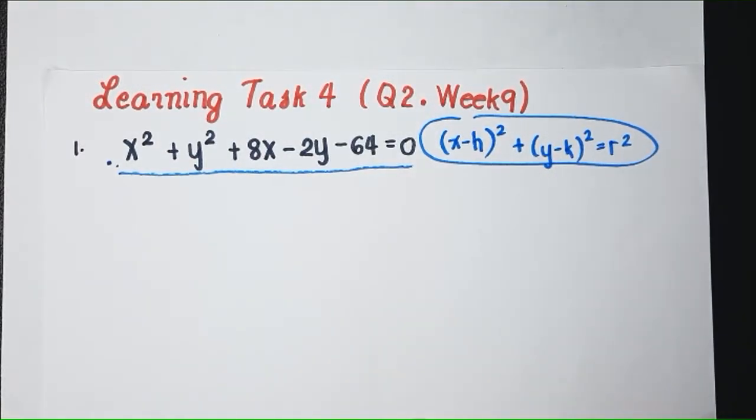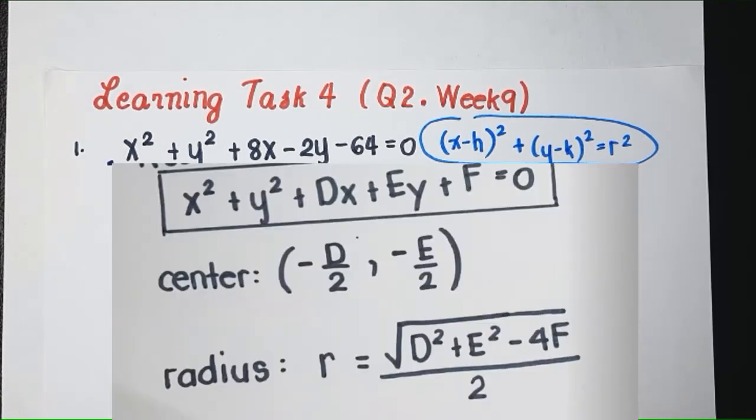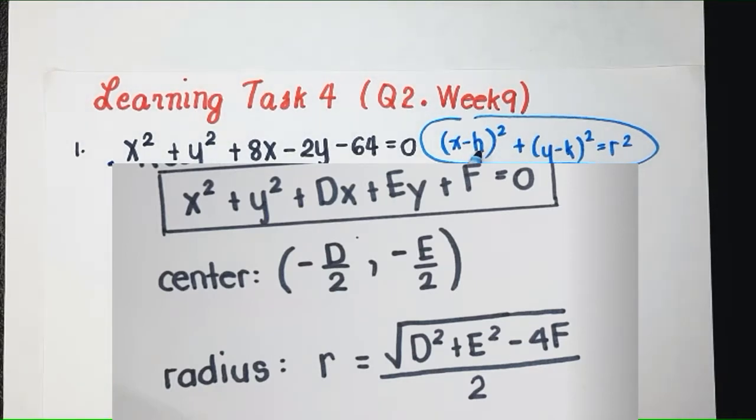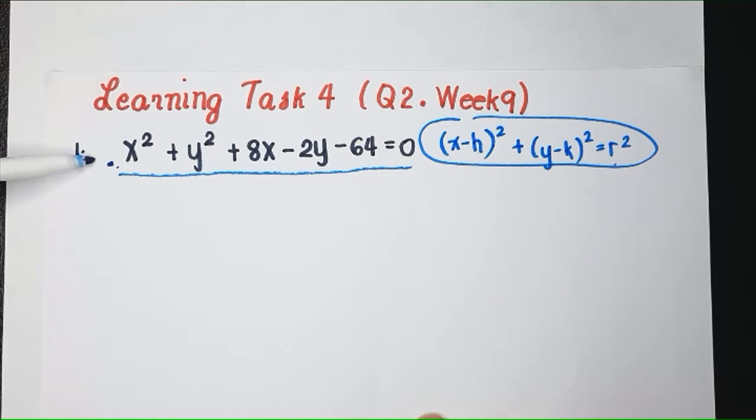Let me write: x minus h squared plus y minus k squared equals r squared. Right? So we're going to transform this equation to this form. And if you recall, we have two ways. We can use the formula or we can transform this by completing the square.